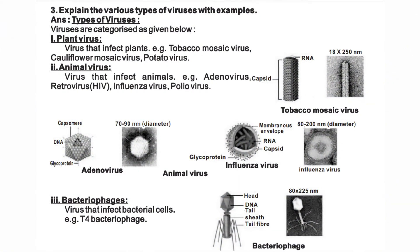Explain the various types of viruses with examples. Viruses are categorized as: Plant viruses — viruses that infect plants, e.g., Tobacco Mosaic Virus, Cauliflower Mosaic Virus, Potato Virus. Animal viruses — viruses that infect animals, e.g., Adenovirus, Retrovirus, Influenza Virus, Poliovirus. Bacteriophages — viruses that infect bacteria.